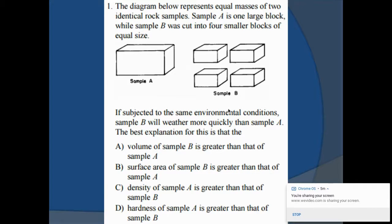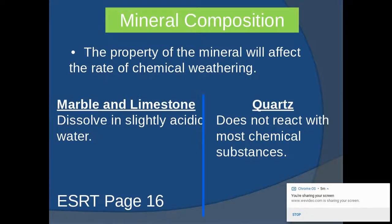Density of sample A is greater than that of sample B? It's saying they're identical materials. Therefore, we know identical samples would have the same density. The hardness of sample A is greater than that of sample B? We haven't gone over that yet. That's related to minerals, but we'll tackle that later. The mineral composition, the property of the mineral will affect the rate of chemical weathering. Marble and limestone dissolve in slightly acidic water. Page 16 of the earth science reference table shows certain minerals dissolve in acid. Quartz does not react with most chemical substances.